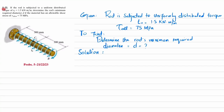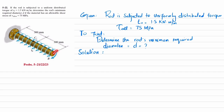Welcome back. Problem 5-22. The statement is: if a rod is subjected to a uniformly distributed torque of 1.5 kilonewton-meter per meter, determine the rod's minimum required diameter d if the material has an allowable shearing stress of 75 megapascal. You can see this is the rod acted upon by a uniformly distributed torque, and you have to find the required diameter of this rod.